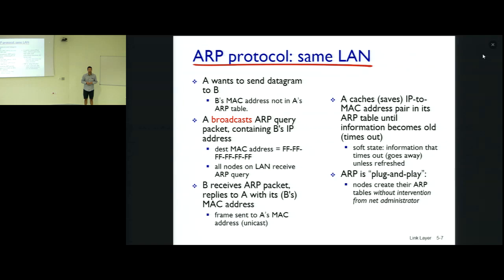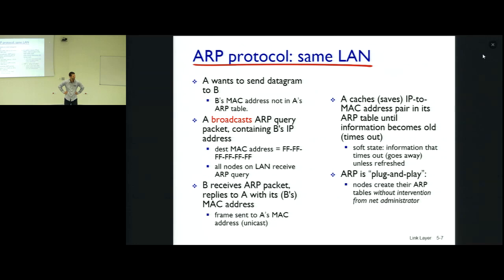B receives the ARP query and sends a unicast reply directly back to A, telling A its MAC address. A then stores this association in the ARP table. This is how we learn the IP-to-MAC mapping. There is no safety mechanism in the basic ARP protocol.